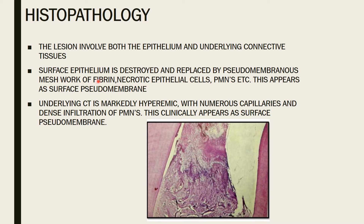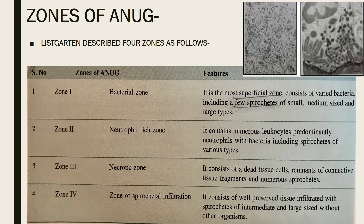This connective tissue changes also clinically appear as the surface pseudomembrane — the gray pseudomembranous slough noted earlier. Listgarten described four zones of ANUG: the bacterial zone, the neutrophil-rich zone, the necrotic zone, and the zone of spirochetal infiltration.